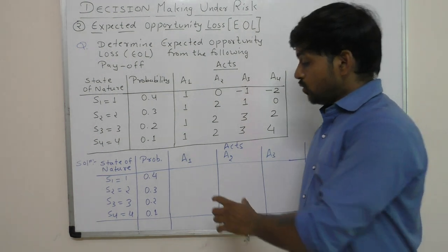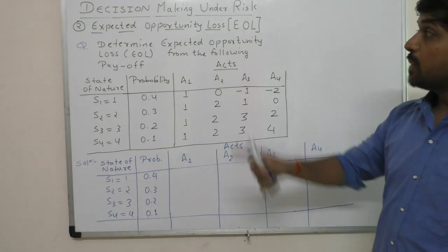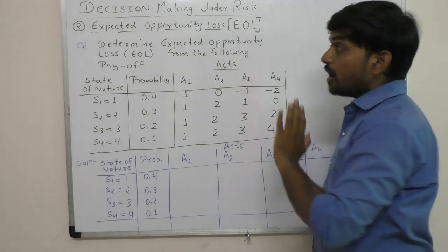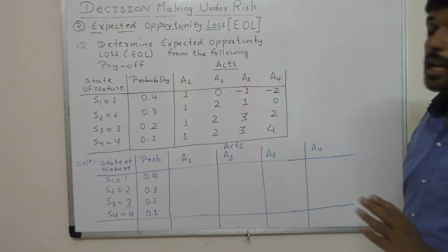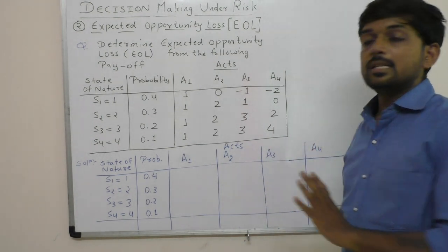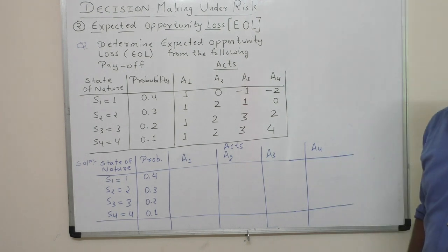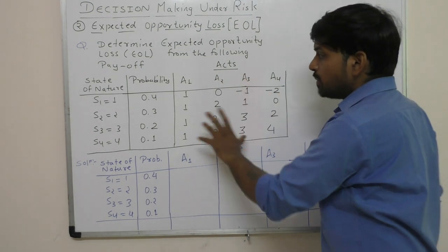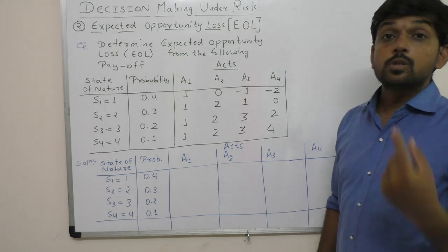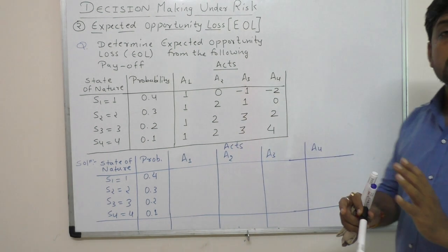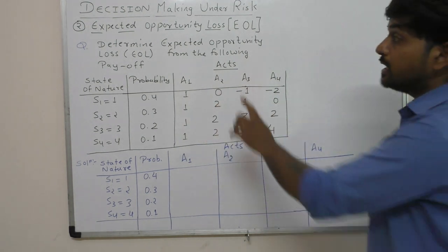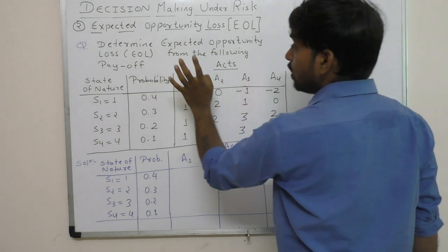After we get the EOL value, whichever act has the minimum expected opportunity loss gives us the optimal decision — it is the best decision. This is the same payoff matrix from the previous video, so you can understand that the answer will be the same. We will now find the expected opportunity loss using this payoff matrix and the given probabilities.